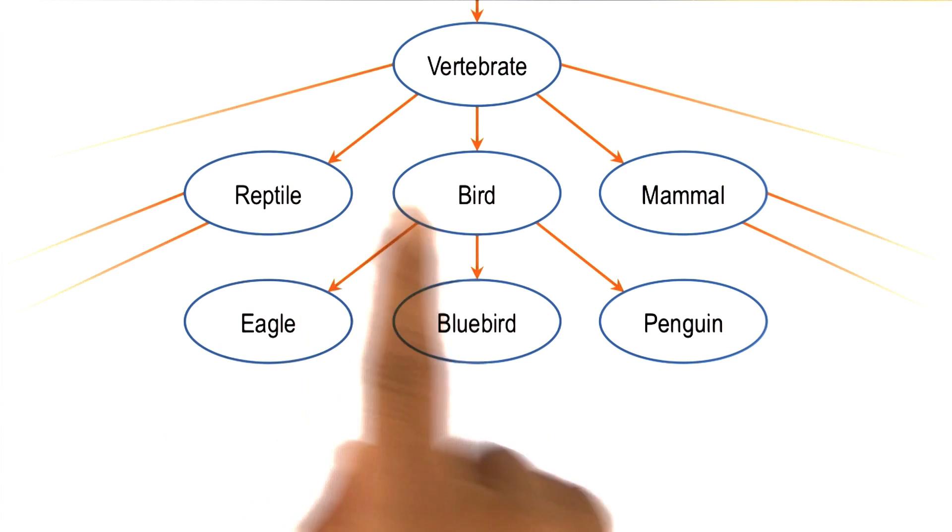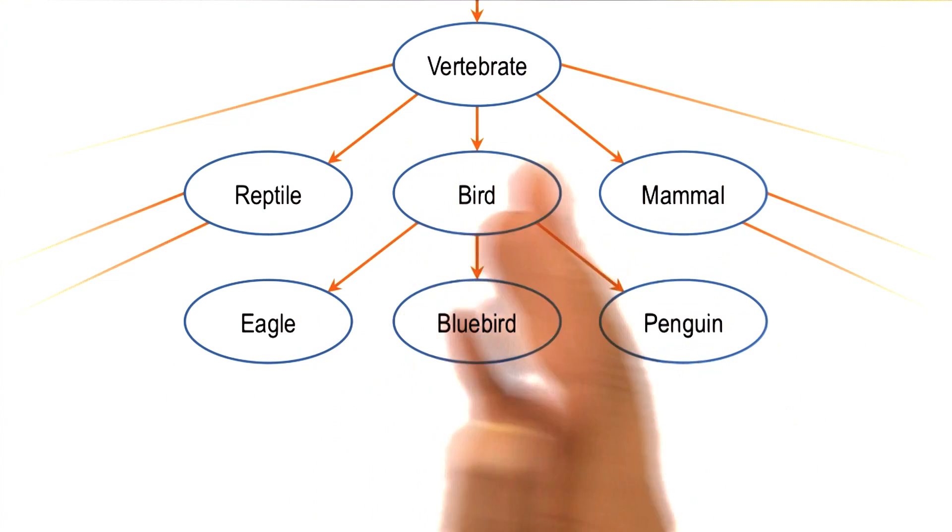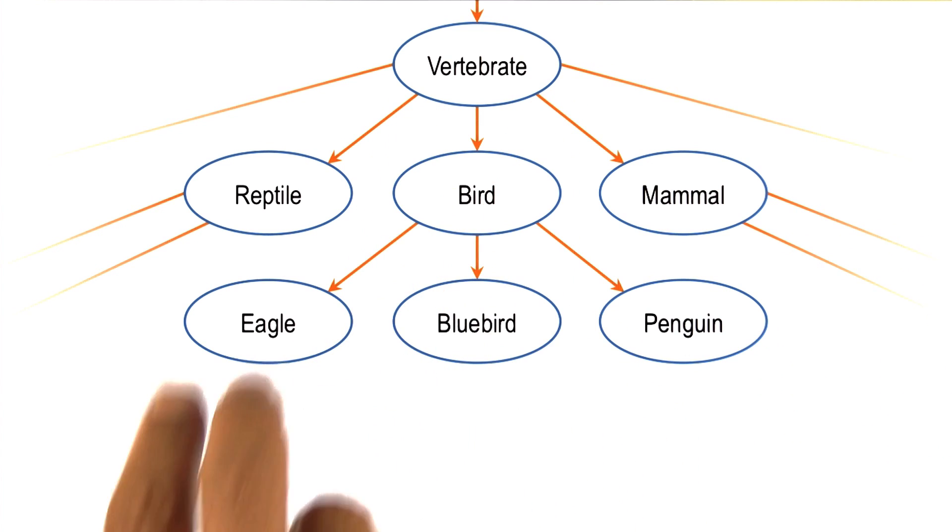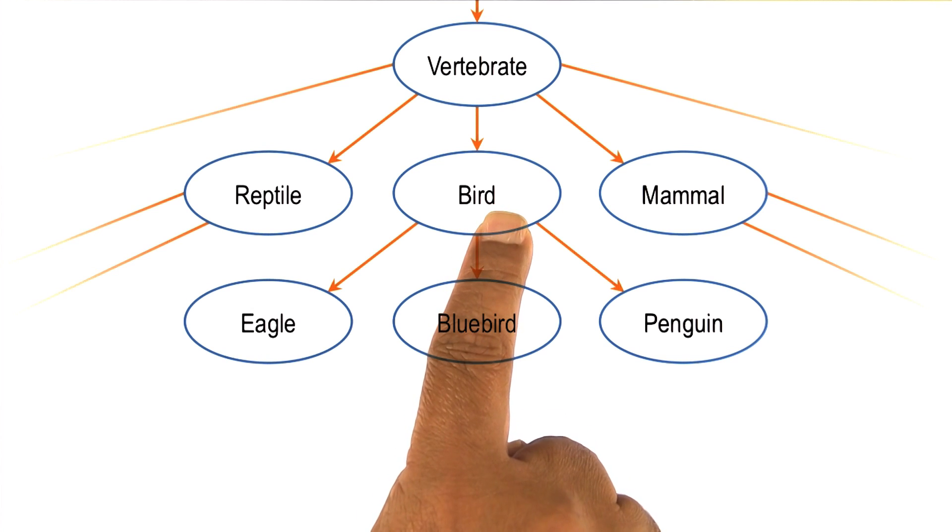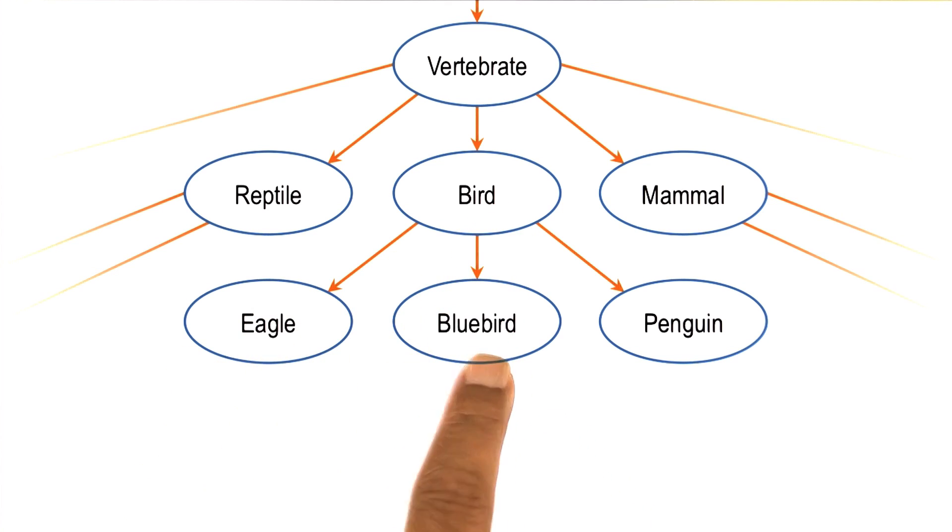Here is a set of concepts that you're probably all familiar with. We have different kinds of animals, vertebrates, invertebrates. Vertebrates themselves can be of different kinds: reptile, birds, mammals, and so on. And here are birds, which can be of different kinds: eagles, bluebirds, and penguins, like we saw in the previous slide.